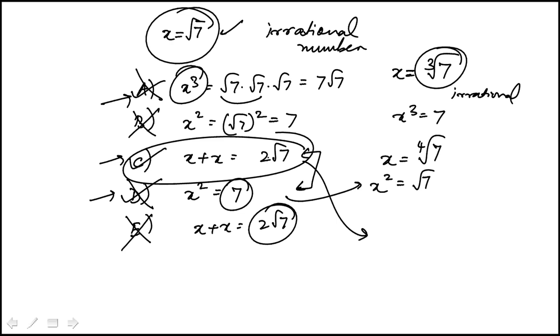I mean, it still works. Or you can recognize x plus x is 2x, and that means two times any irrational number must always be irrational. So that's another way to do it. But either way, the answer is choice C.